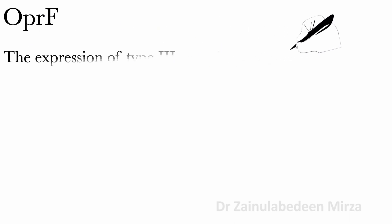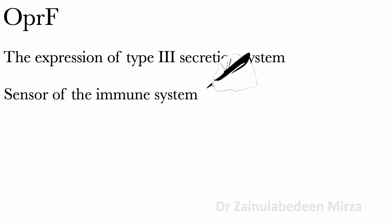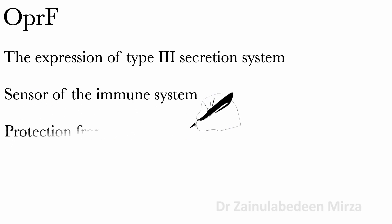The expression of the type III secretion system and its effectors can be modulated by OPRF. It acts as a sensor of the immune system as a C3b receptor and through binding to IFN. In addition, OPRF provides protection from macrophage clearance.